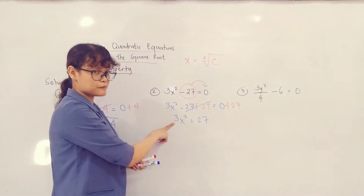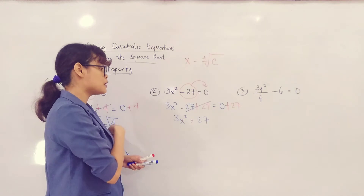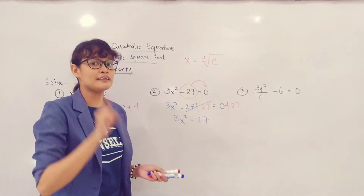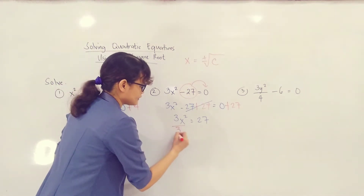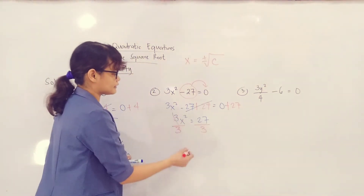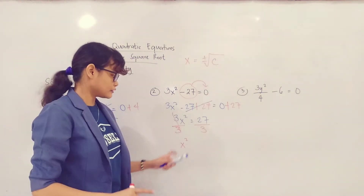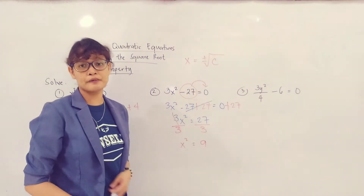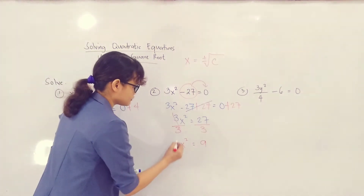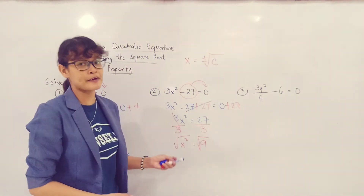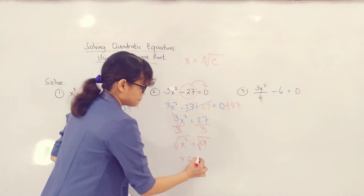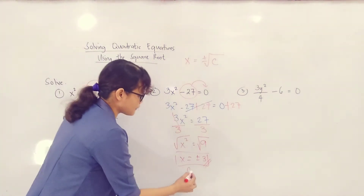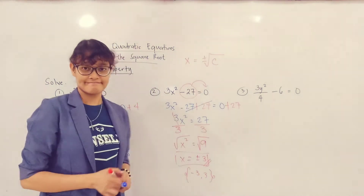Next, hindi pa positive 1 yung coefficient ng variable mo, so kailangan tatanggalin mo siya. At matatanggal na lang yan kapag di-divide natin both sides by whatever that coefficient is. Since eto 3 siya, gusto natin maging 1 siya. So in order for us to do that, divide both sides by 3, or by applying the multiplication property of equality, multiply both sides by 1 third. So since positive 1 na yan, pwede ka na mag-proceed. The square root of x squared is x, and the square root of 9 is positive negative 3. Therefore, the solution set consists of negative 3 and positive 3.